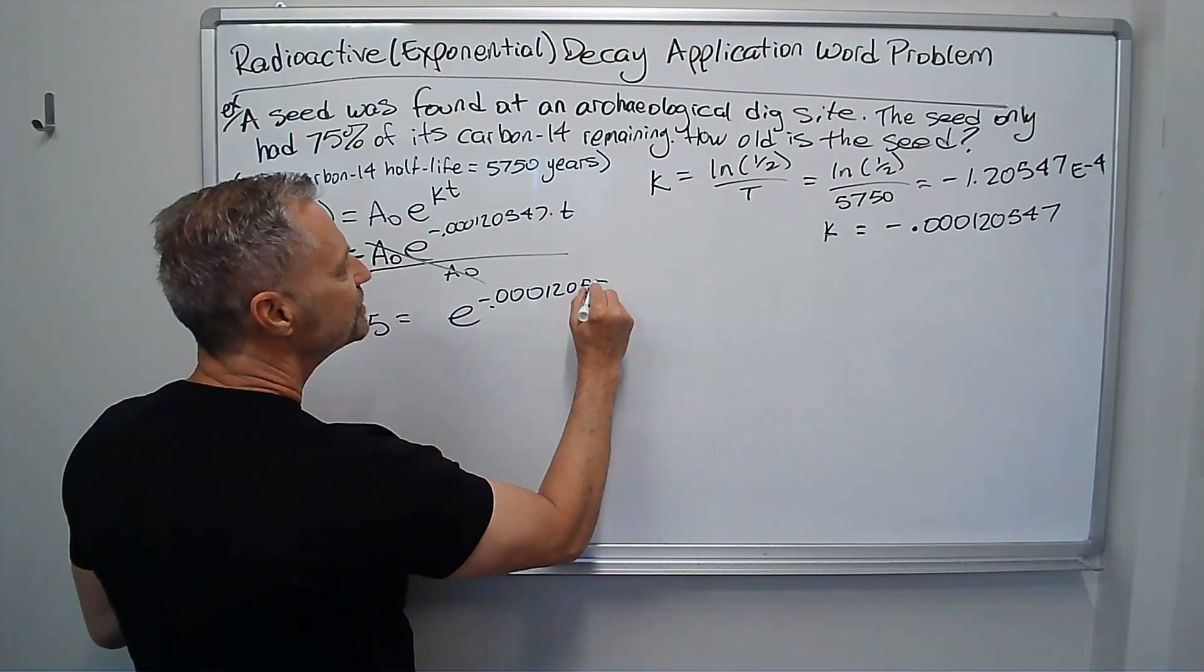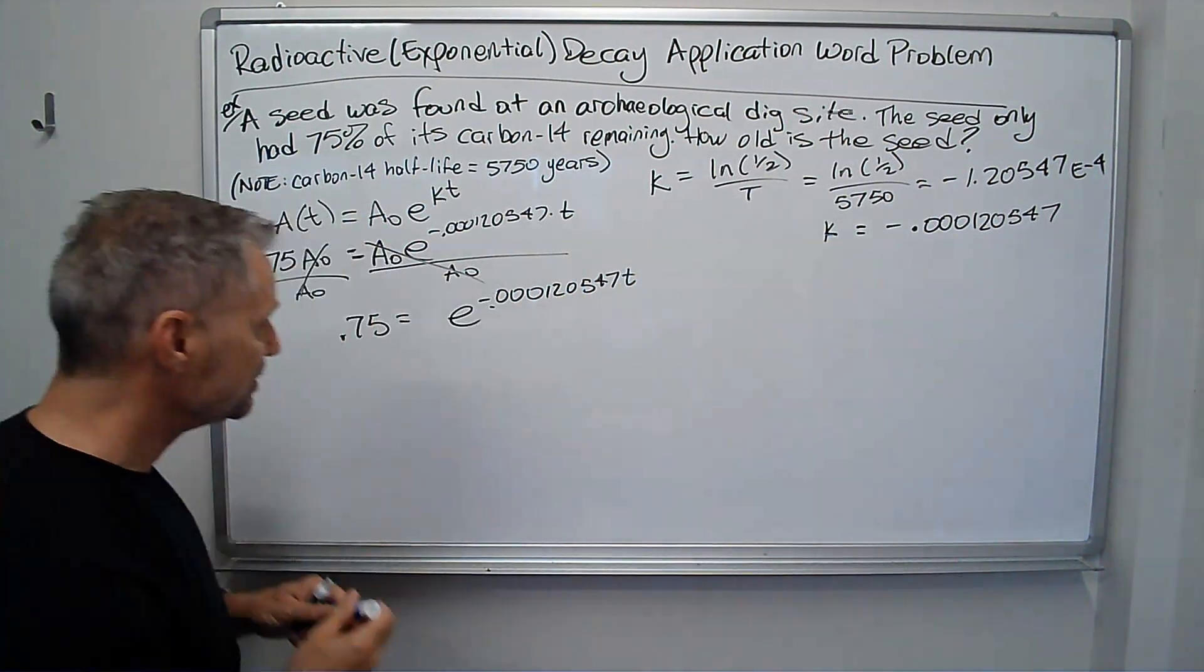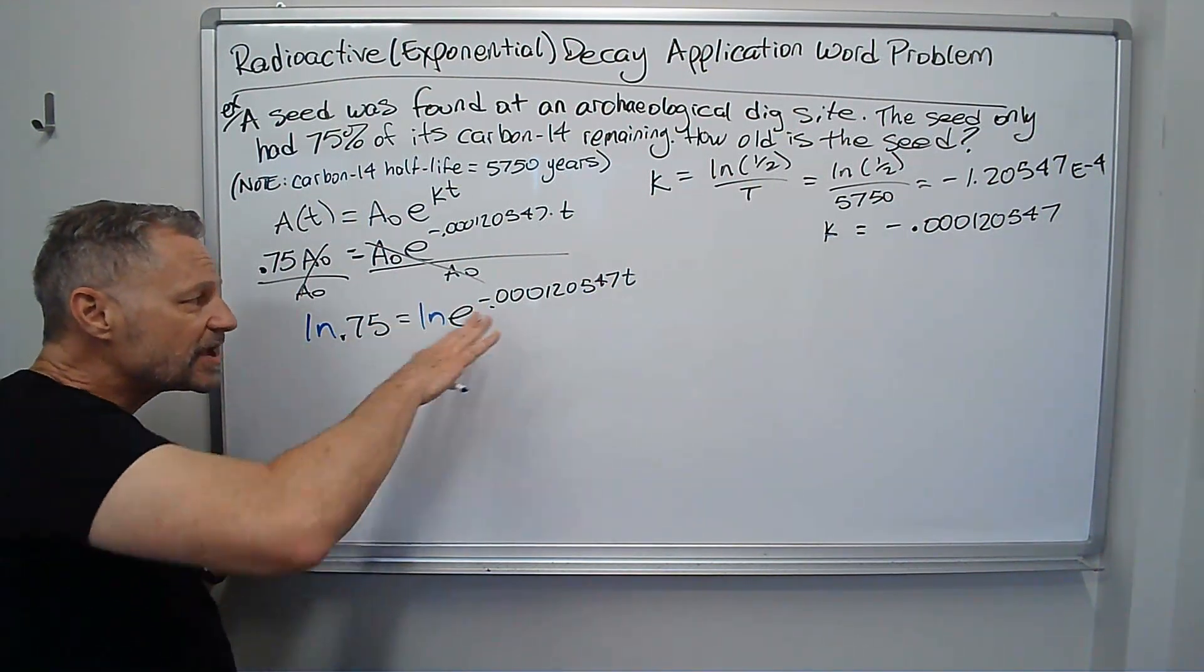And then remember to solve that, I just take the ln of both sides. ln is the inverse of e to the power, so they cancel out. I just get that stuff.